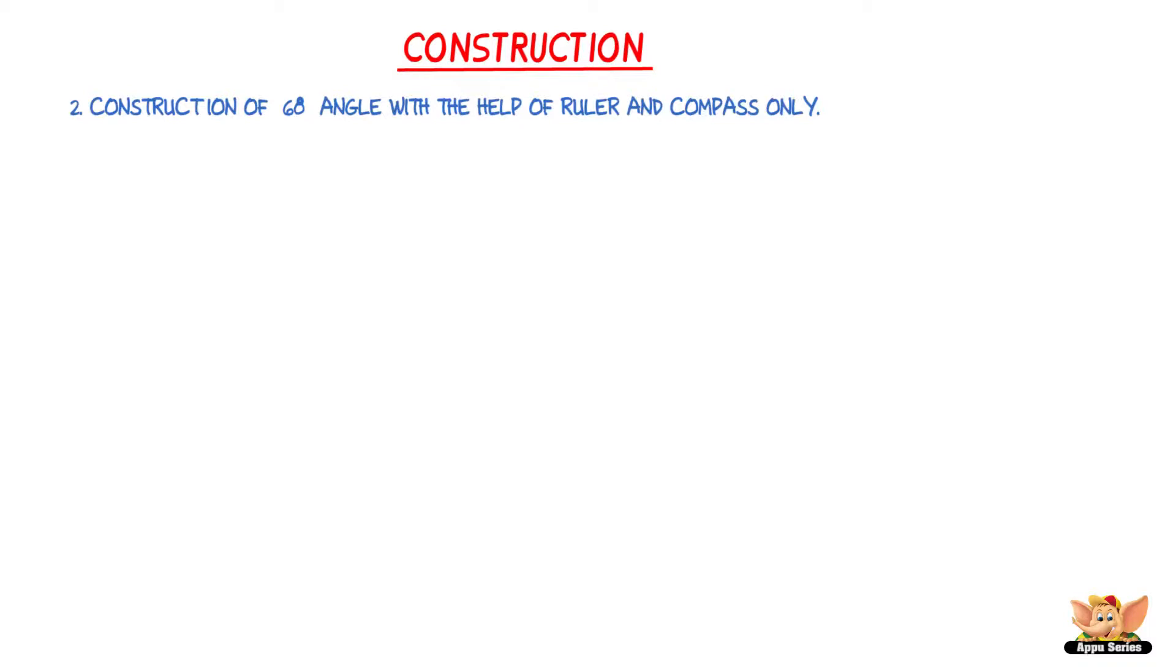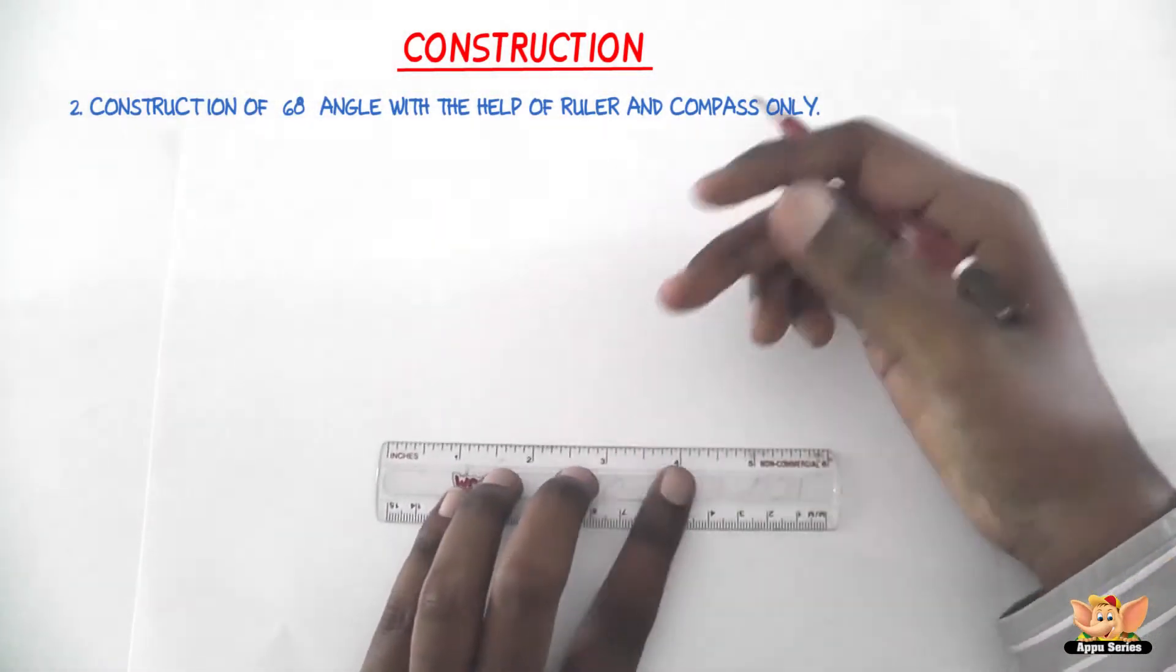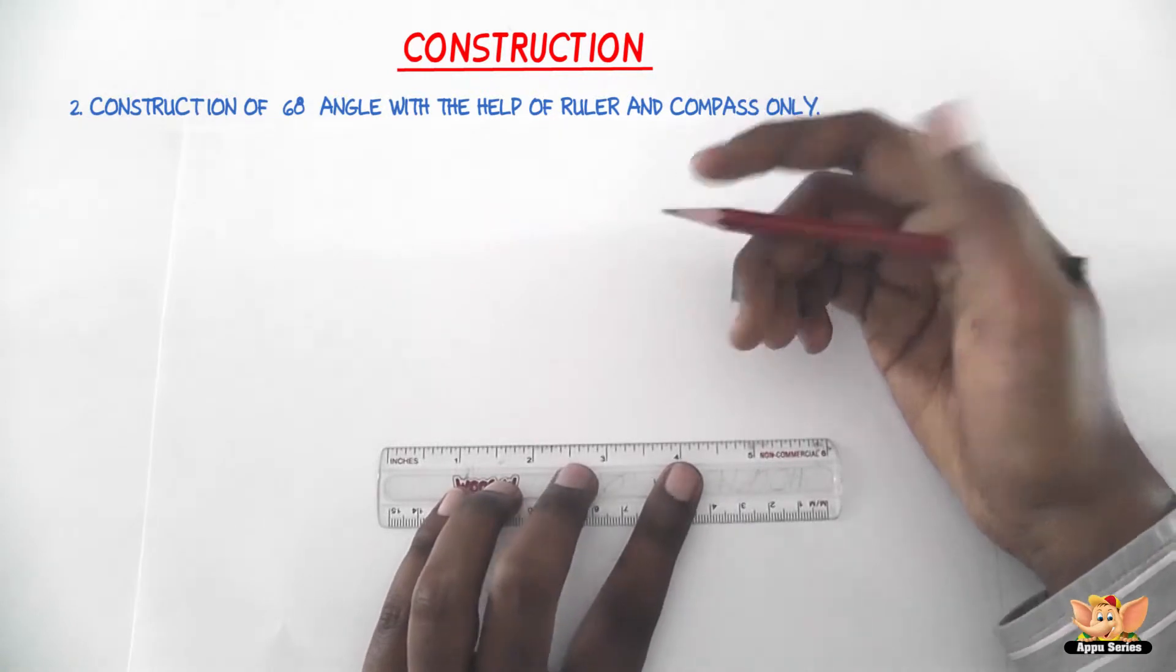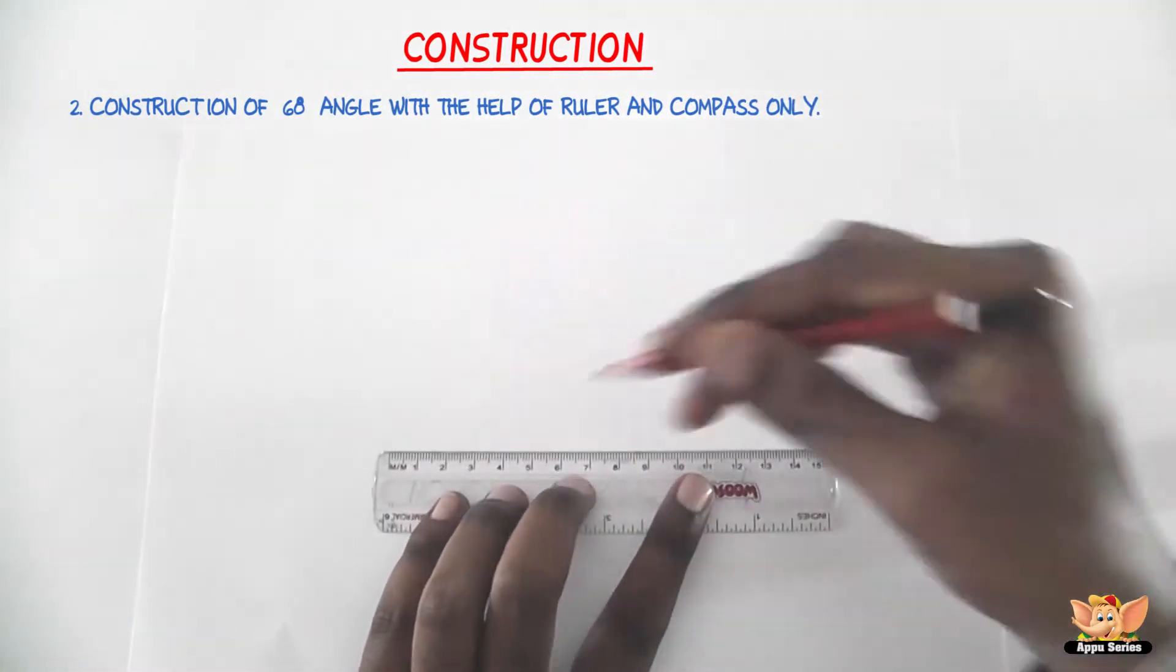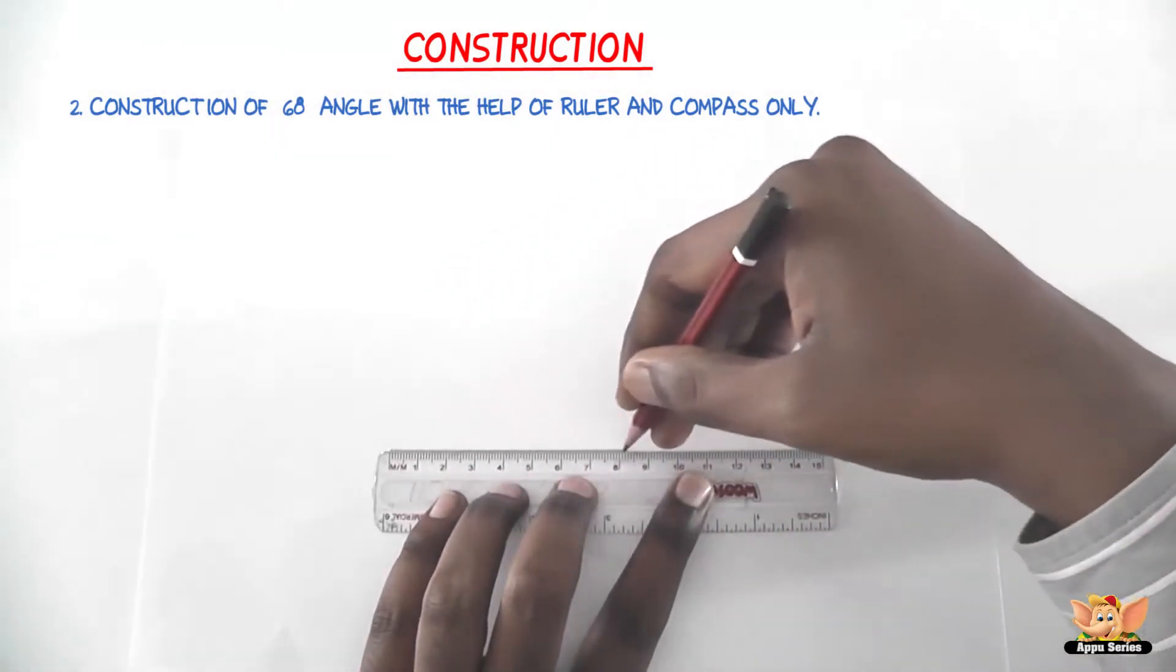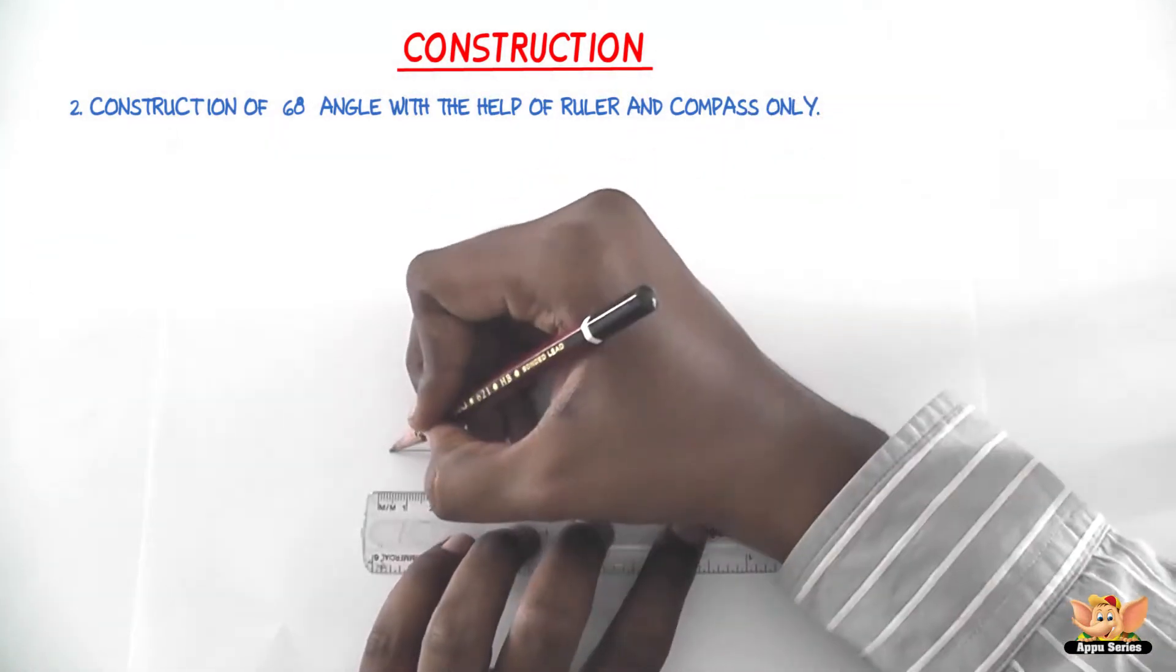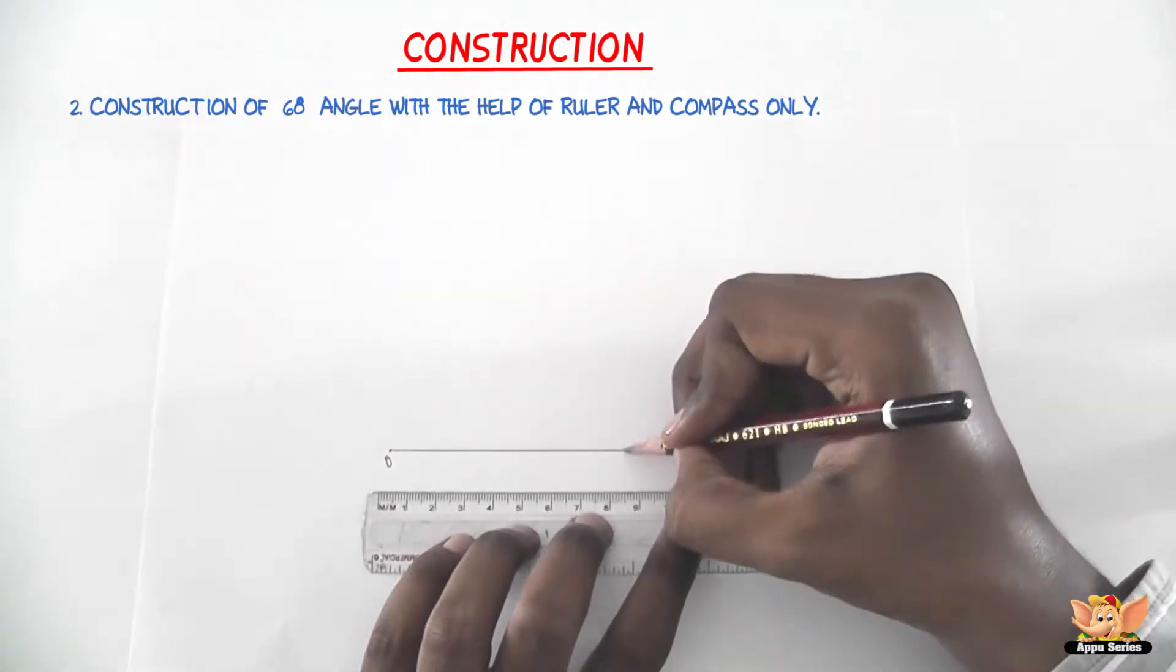So the first step is draw a ray OA of any convenient length. So this point is O and this point is A.